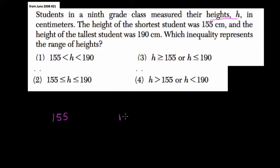That means all of our heights could be greater than or equal to 155, and less than or equal to 190. Everything between the smallest and greatest. That's an AND statement - it's got to be between both of them. So that's choice 2.